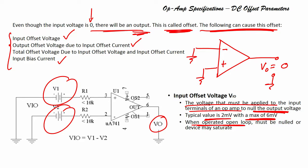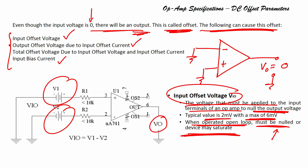When operated in open-loop condition, the offset must be nulled or the device may get saturated. A small amount of input voltage causes the output to keep increasing due to the infinite open-loop gain. So before using in open-loop or even closed-loop, we must always null the output voltage using the input offset voltage Vio.